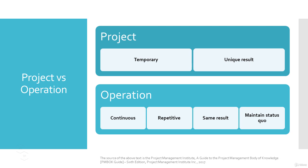The operation is always continuous and repetitive. For example, launching a new product in the market, upgrading your Primavera P6 local server-based installation to a cloud-based environment, and constructing a building or facility — these are common examples of a project. On the other hand, operation is ongoing and always repetitive; it involves work that is continuous without an ending date, and we often repeat the same processes and produce the same results all the time. We can say that operation is like business as usual. The set of activities that are repetitive, ongoing, and produce the same results are what we refer to as operation.